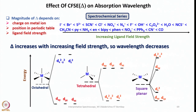Now let us look at the factors that affect crystal field stabilization energy and absorption wavelength. The absorption wavelength is directly proportional to the CFSE, which is governed by the spectrochemical series. The magnitude of Δ depends on: the charge on the metal (whether +1, +2, or +3 state), the position in the periodic table (whether 3d, 4d, or 5d series), and the ligand field strength. As CFSE increases and the HOMO-LUMO gap increases, higher energy is required and wavelength decreases.